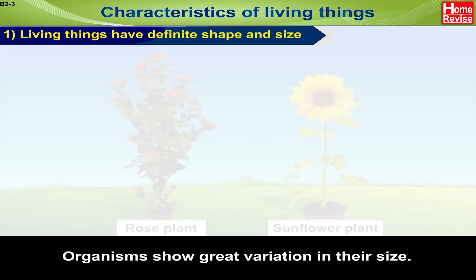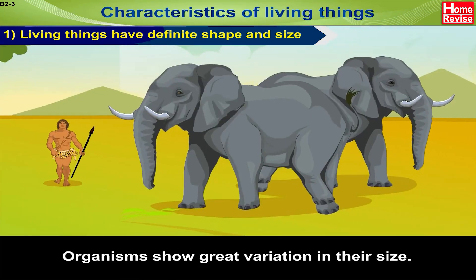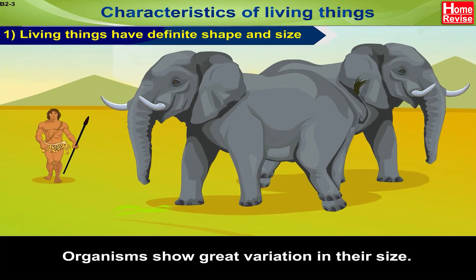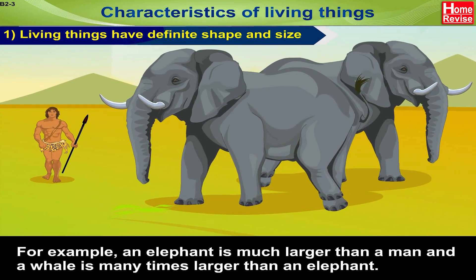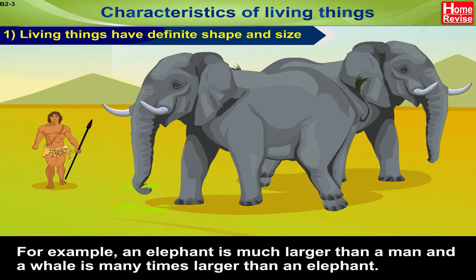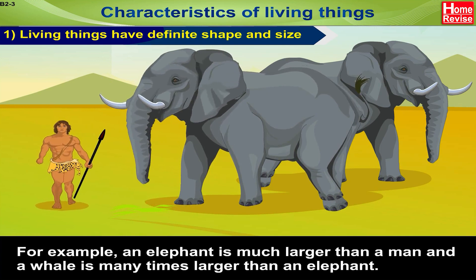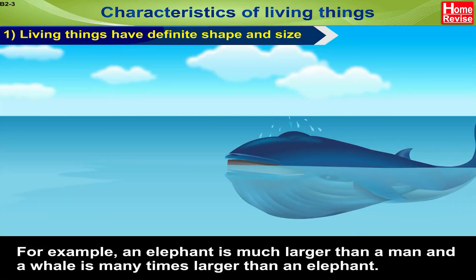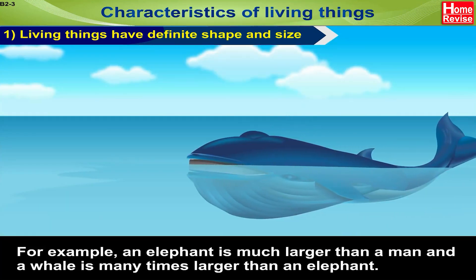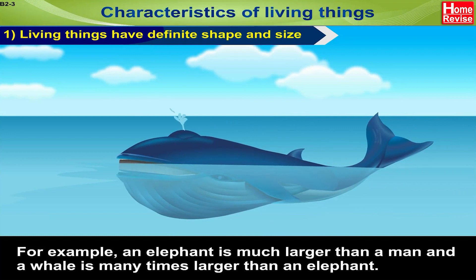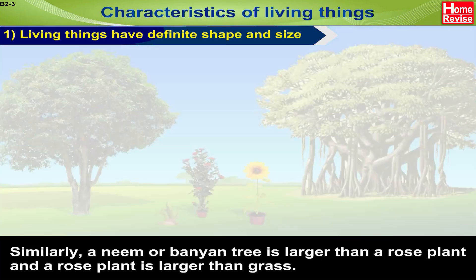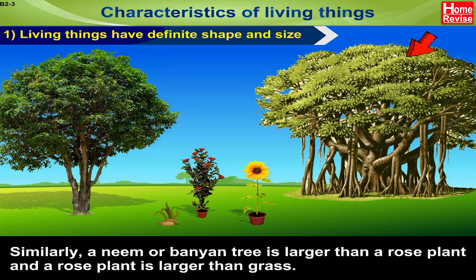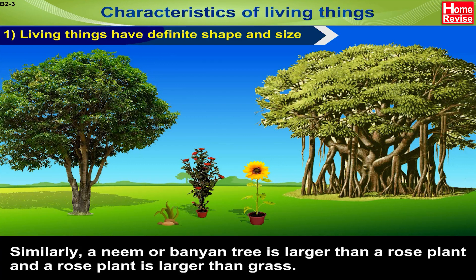Organisms show great variation in their size. For example, an elephant is much larger than a man. A whale is many times larger than an elephant. Similarly, a neem or banyan tree is larger than a rose plant. A rose plant is larger than grass.